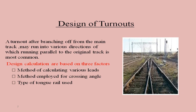The design of turnout is based on three factors. The three factors include the methods of calculating various leads. The various leads include the curve lead, the switch lead, and the crossing lead. Then the methods employed for crossing angle — crossing angle is that alpha angle. When you're having a crossing, whether it is an acute crossing or an obtuse crossing, you have an angle over there and that is known as the crossing angle, taken as alpha. Then the type of tongue rail used also affects the design of turnout calculations.